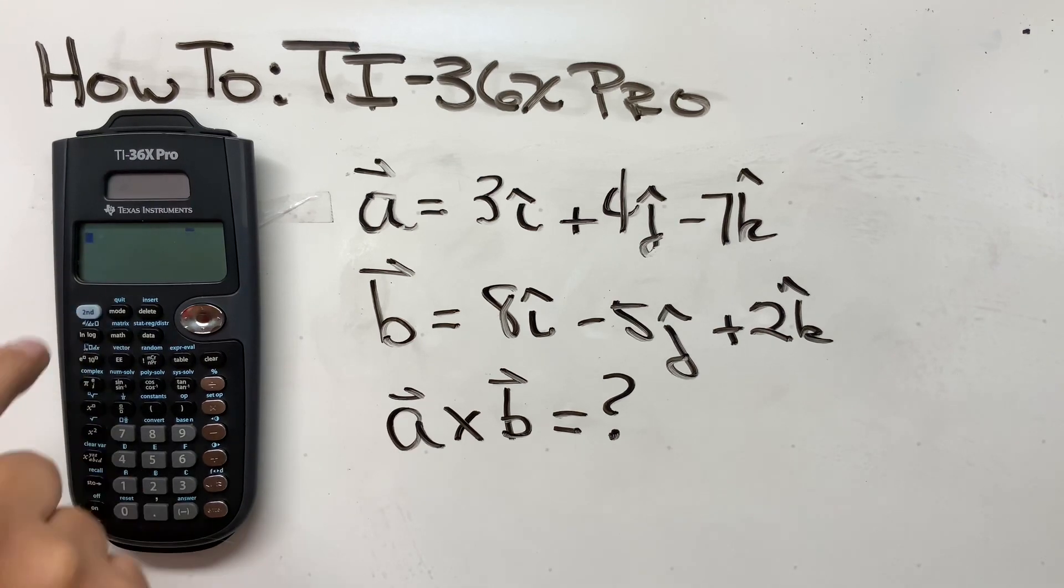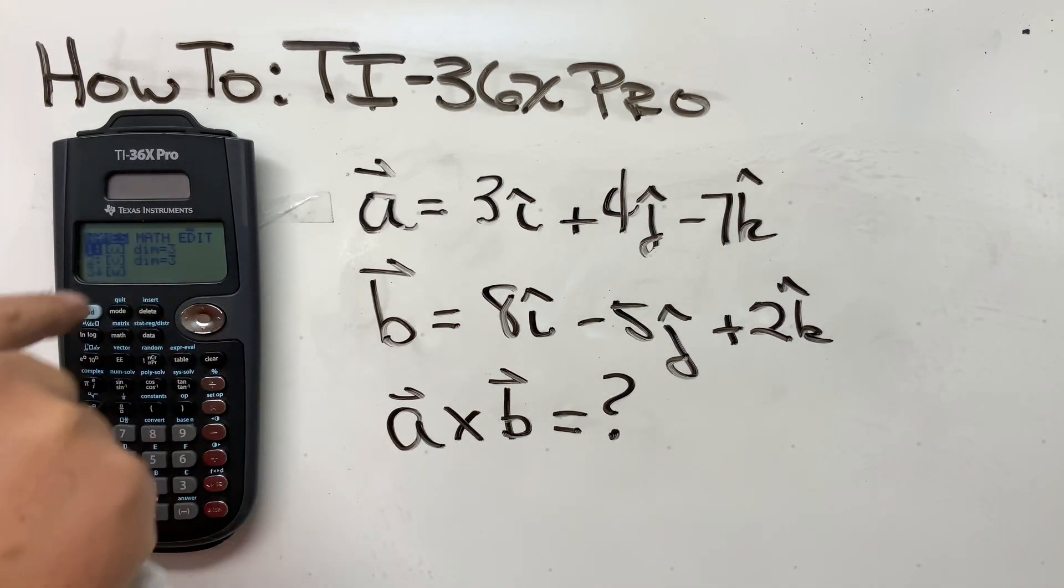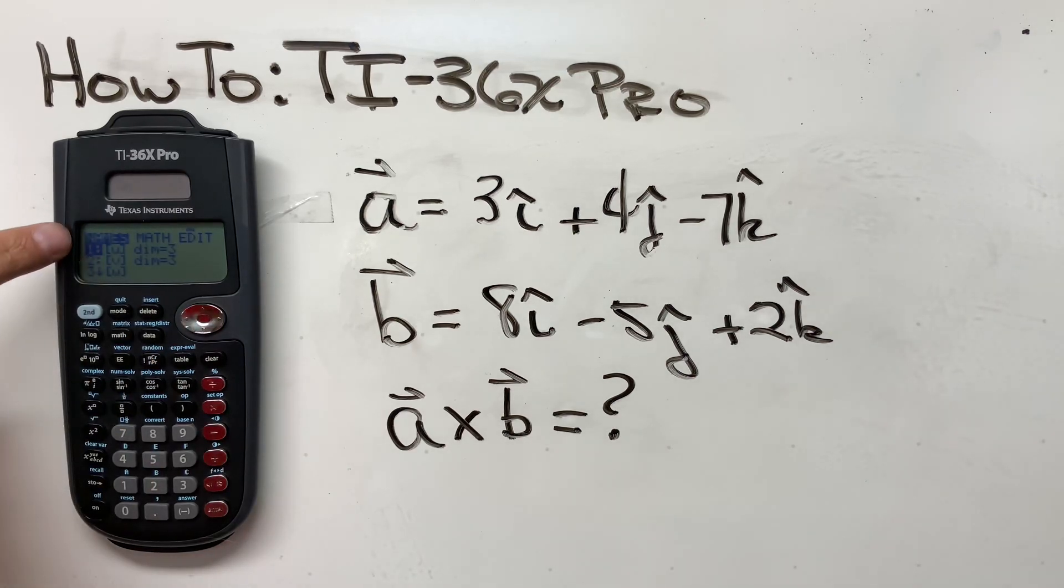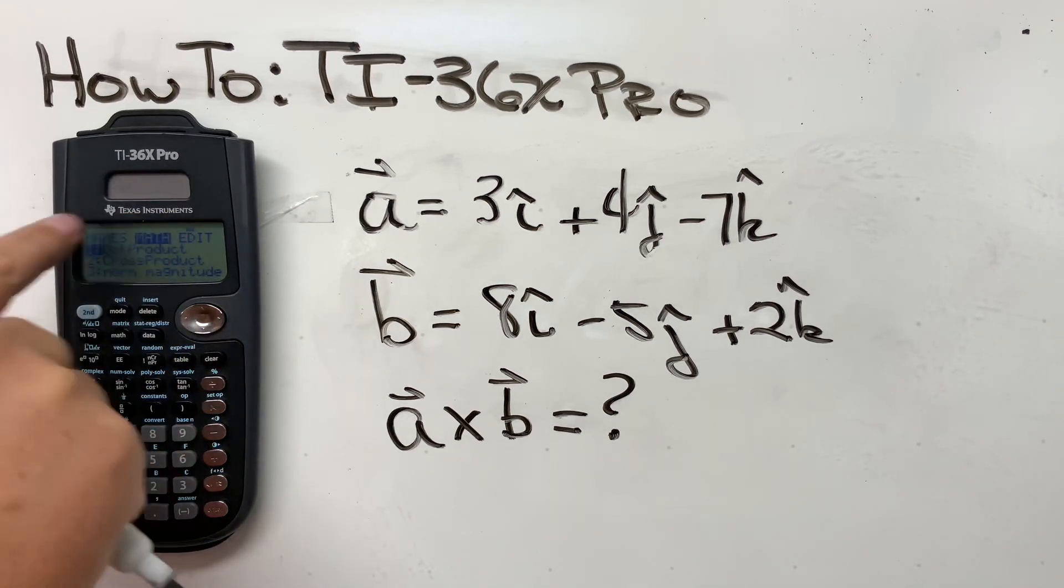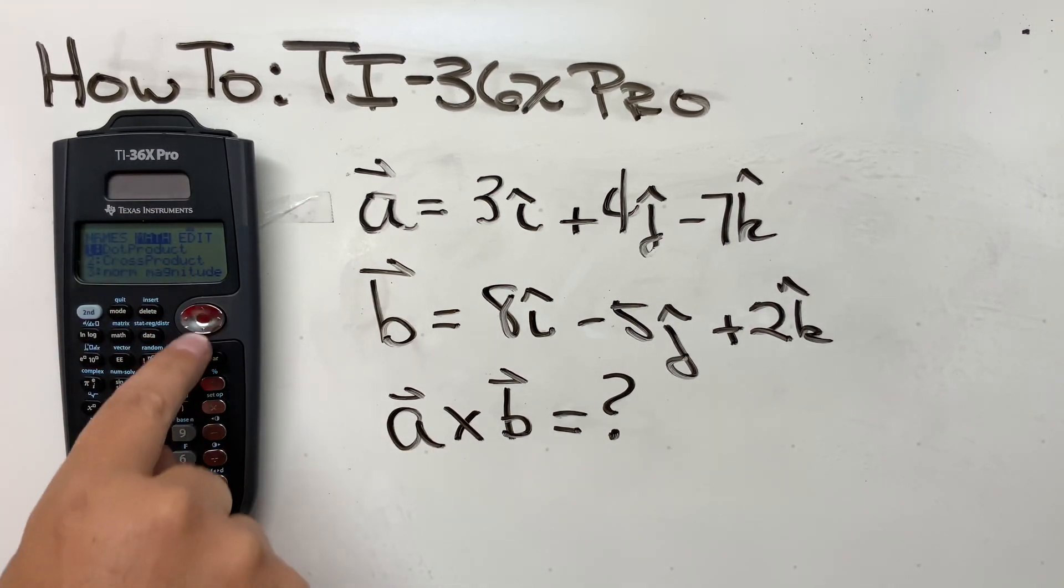I'm going to go second, quit again. Now if you go back to vector, you'll see that we have a vector entered for U and a vector entered for V. So now let's cross these guys. So we go over to math, and then we go down to cross product. This is a cross product.